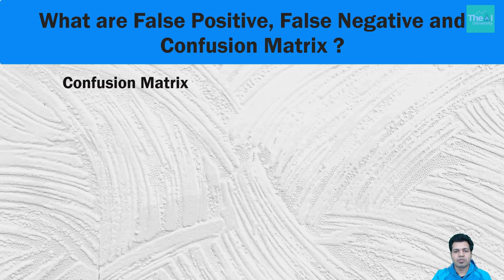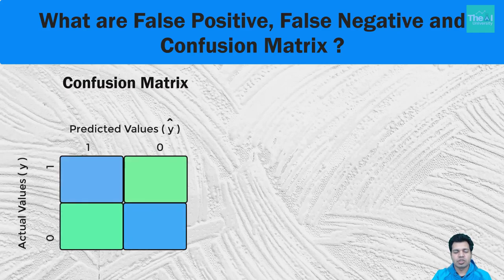As the name suggests, we are going to build a matrix. We have predicted dependent variable values at the top, depicted as y-hat, showing whether a particular event is going to happen or not. On the left hand side we have actual values represented by y, showing whether an event actually happened or not. Both predicted and actual variables have two types of values: 0 and 1. The quadrant where actual value y is 1 and predicted value y-hat is also 1 is the true positive case.